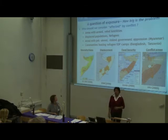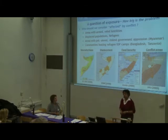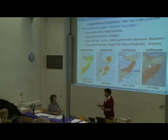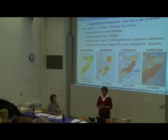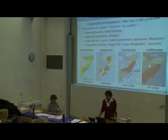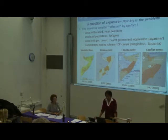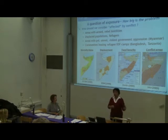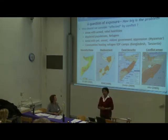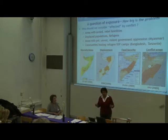The question of exposure — how big is the problem — is important because these are issues very much in the press today. How do we define 'affected'? Are these areas with armed and rebel hostilities? Areas with displaced populations and refugees but no hostilities? Areas with political unrest and violent government oppression? Is all of Myanmar a conflict-affected country? Because if you cannot put a parameter on it, you don't have an analysis.